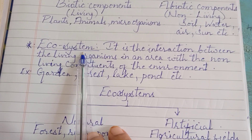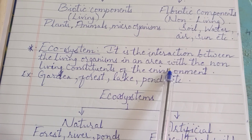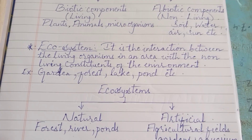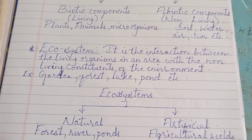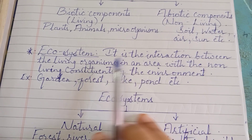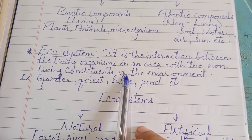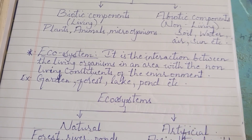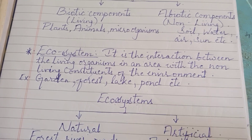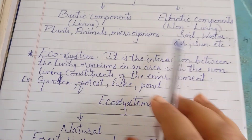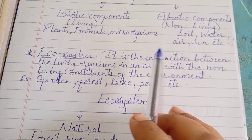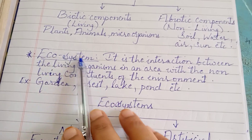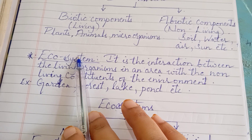Then we came across a very important definition: ecosystem. It is the interaction — the way the living and the non-living organisms which live in a particular area make use of each other and come into contact with one another. That interaction, and the place where it occurs, we are calling it an ecosystem.